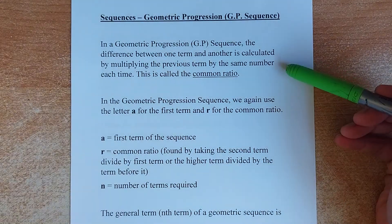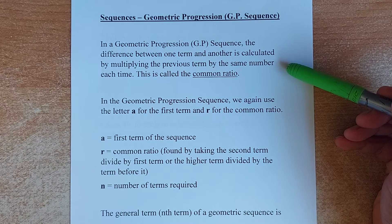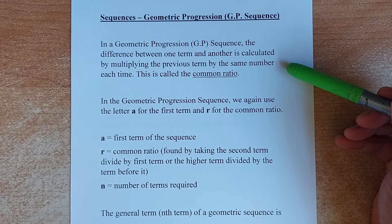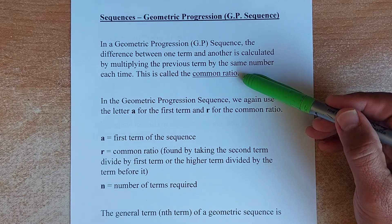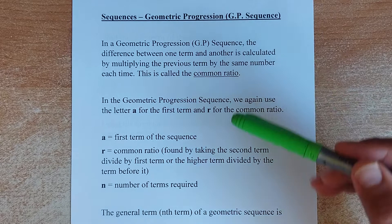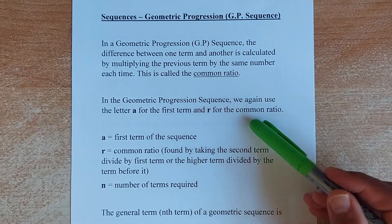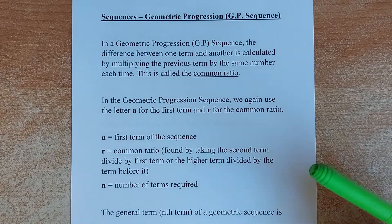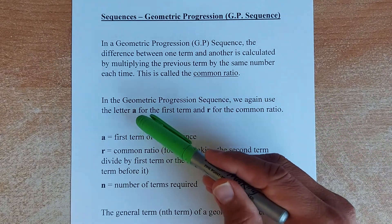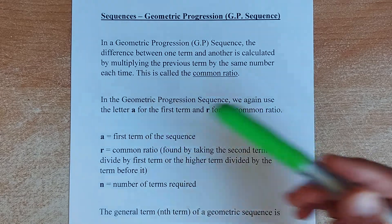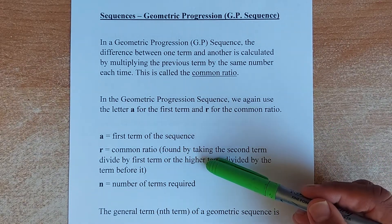In the GP, the difference between one term and another is calculated by multiplying the previous term by the same number. In the AP, you add or subtract. In the GP, you multiply. The difference is called the Common Ratio, represented by the letter R. R represents Common Ratio. The first term of the GP, as well as the AP, is represented by the letter A. So A is the first term, R is the Common Ratio.